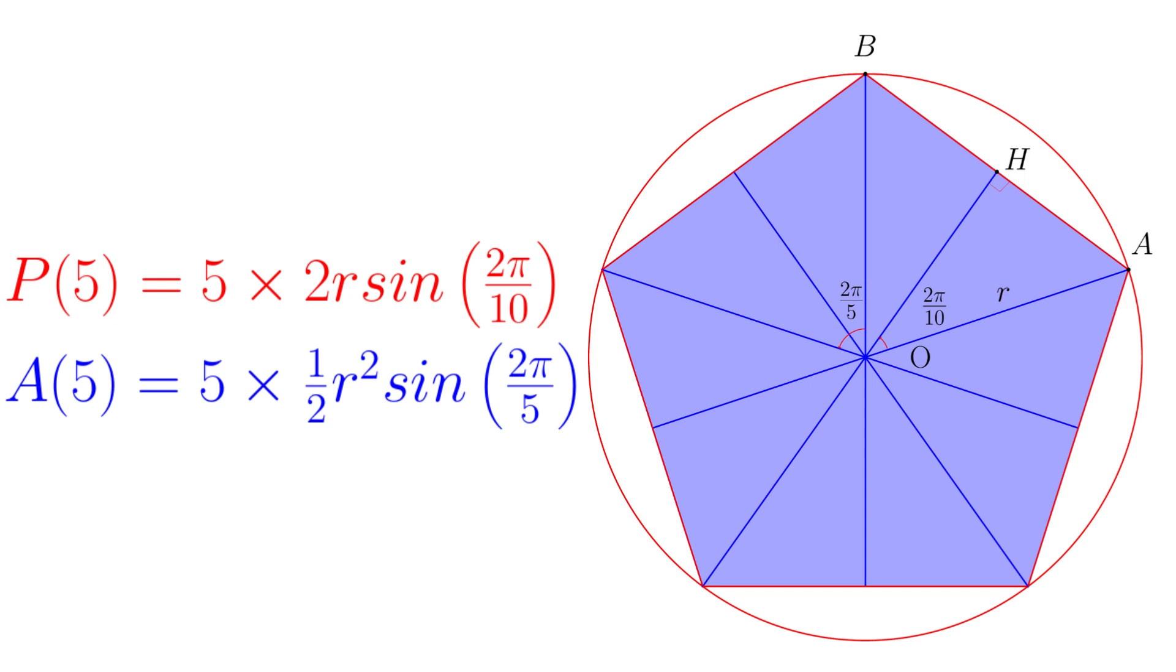Similarly, one could easily find the formulae for the perimeter P(5) and area A(5) of a regular pentagon inscribed in the given circle, as shown on the left side.